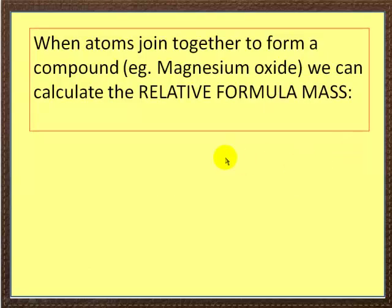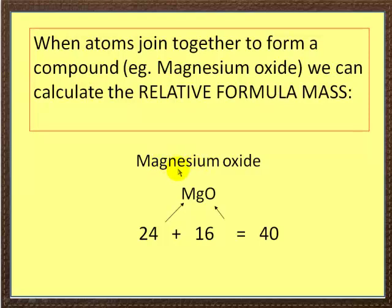Now what happens when atoms join together is they form compounds, and from those we can calculate what's called the relative formula mass. Let's look at an example. Here we've got, if you burn magnesium ribbon in air, you form magnesium oxide, MgO.